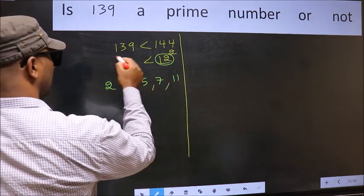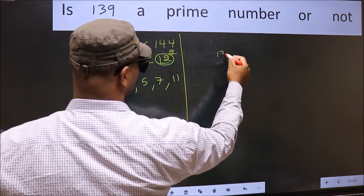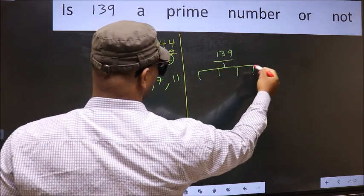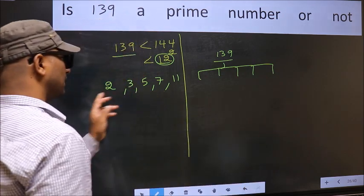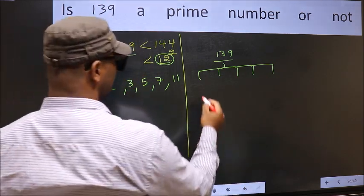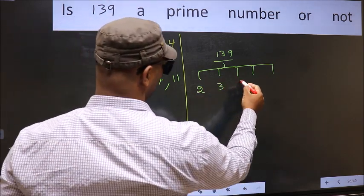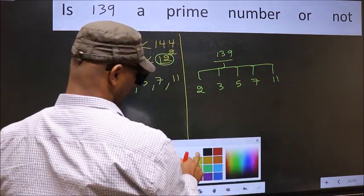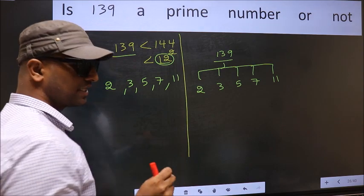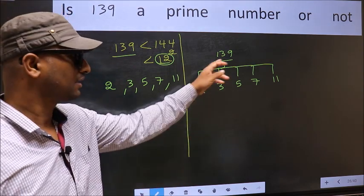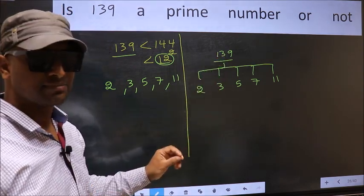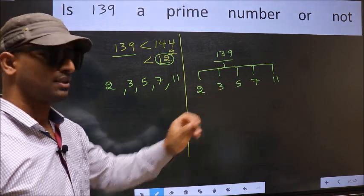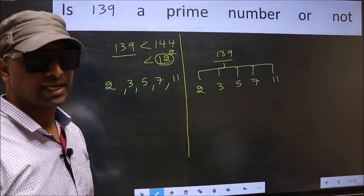Now for the given number, we should check divisibility by these numbers, that is 2, 3, 5, 7 and 11. If the given number is divisible by any one of these numbers, we say it is not a prime number.